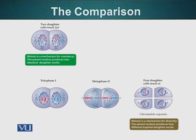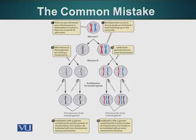In mitosis, the daughter cells have 2N — they have the same amount of genetic material as the parent. Additionally, I would also like to mention that sometimes there are mistakes made in meiosis which have serious consequences.